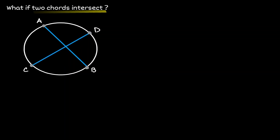At the intersection, we have created four different angles: the angle on the left, the top, to the right, and the bottom.